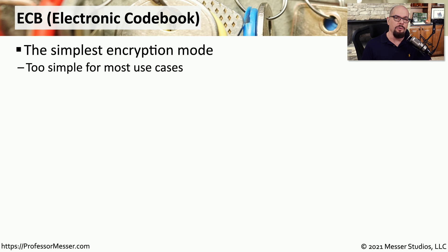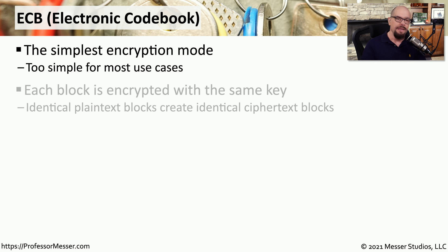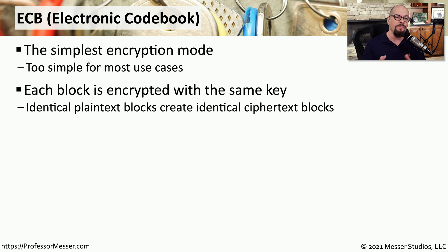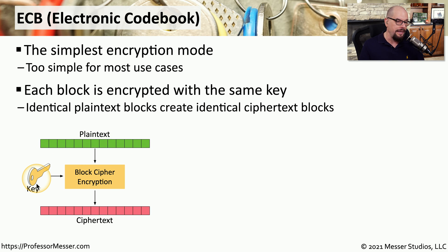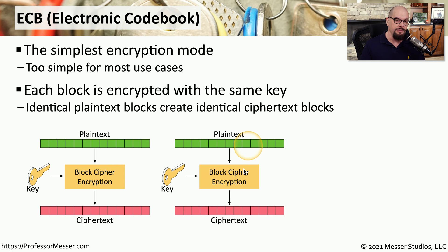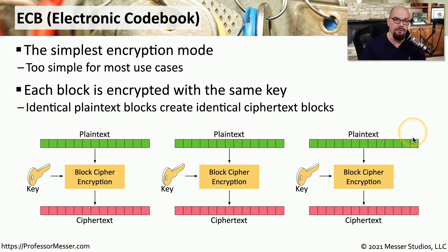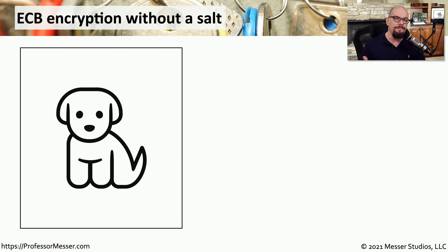One of the simplest modes of operation for block ciphers is ECB, or Electronic Code Book. This uses a single encryption key and performs exactly the same encryption for every block in the series. We start with some plain text, use our symmetric key to encrypt that data, and end with some ciphertext. Then we grab the second block, perform the same encryption using the same key, and get ciphertext output — and we continue that process through the entire file. Each block is encrypted exactly the same way, so if the input is identical, the output will be identical for every block.